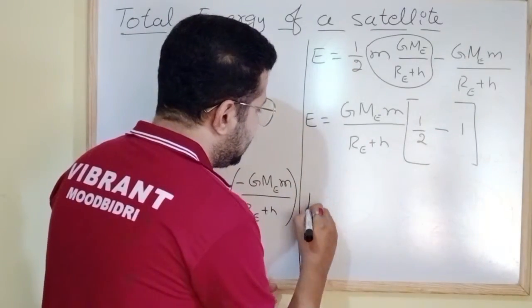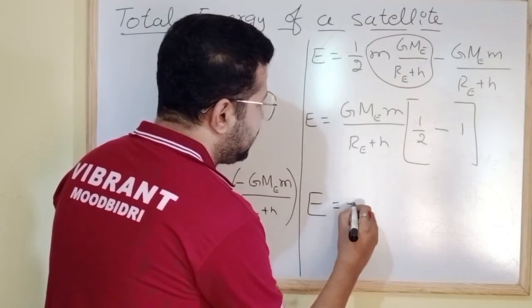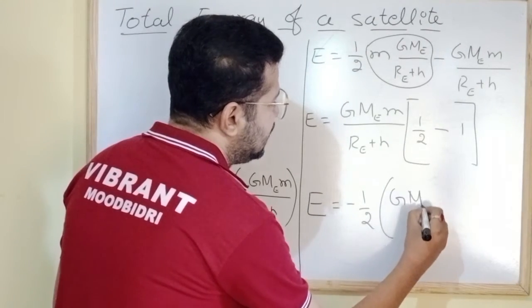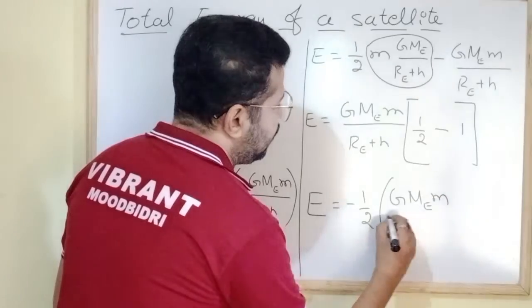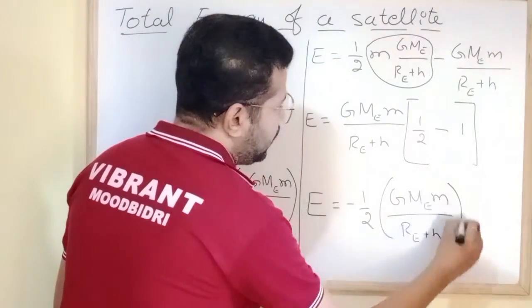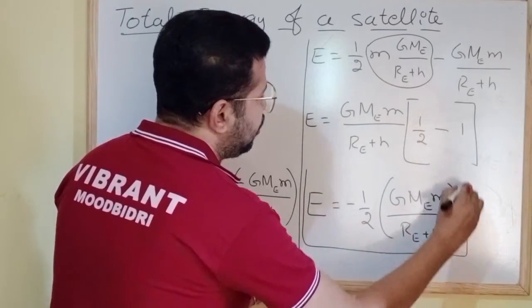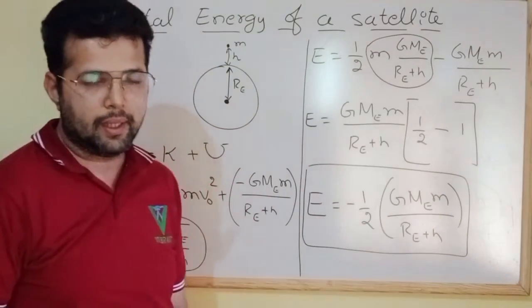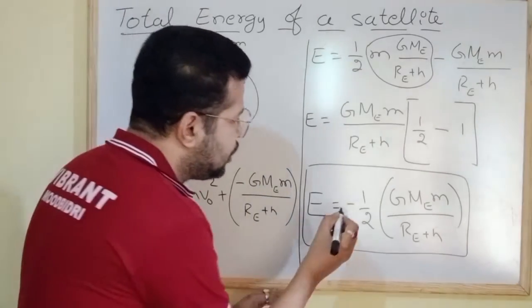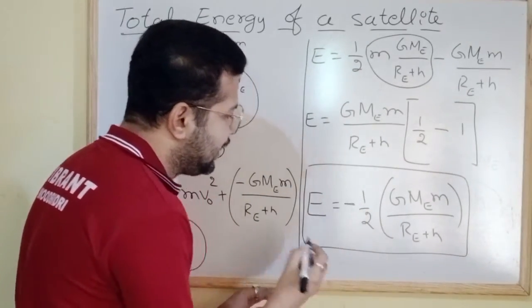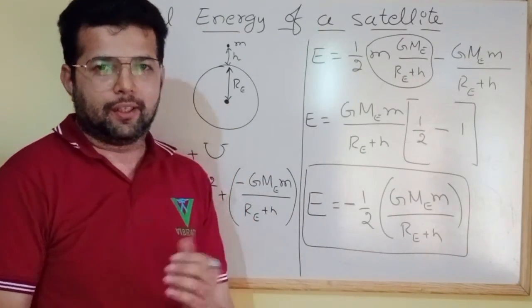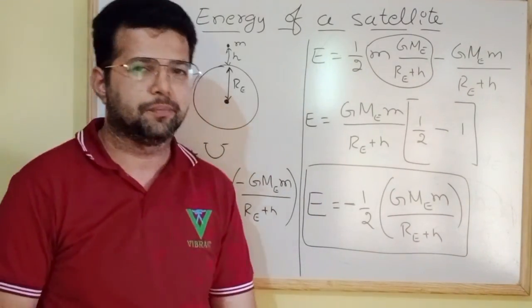So total energy of a satellite E is equal to minus half times G times M_E times M divided by (R_E plus h). This is the expression for total energy of a satellite. The negative symbol here indicates that the satellite is bounded to the Earth. Thank you very much.